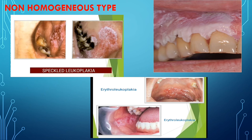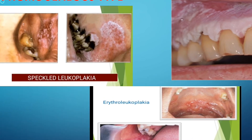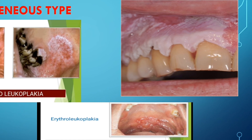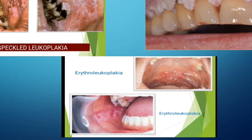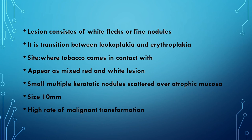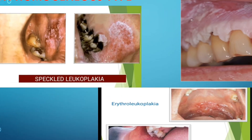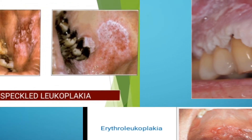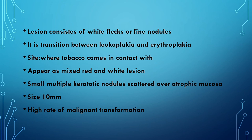Non-homogeneous leukoplakia is of three types: speckled, verrucous, and erythroleukoplakia. The lesion consists of white flakes or fine granules — you can see many nodules or granule-like structures. Small raised nodules are visible. It represents a transition between leukoplakia and erythroplakia, where erythroplakia is a red patch in the oral cavity. The site is where tobacco comes in contact — usually the buccal surface or lips.